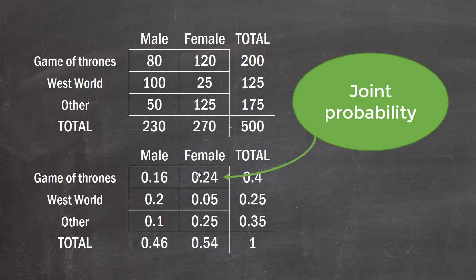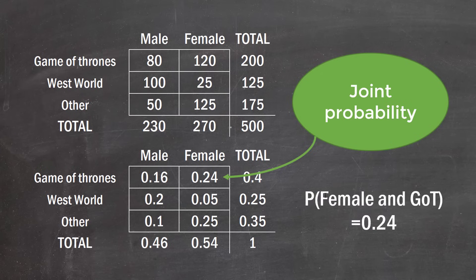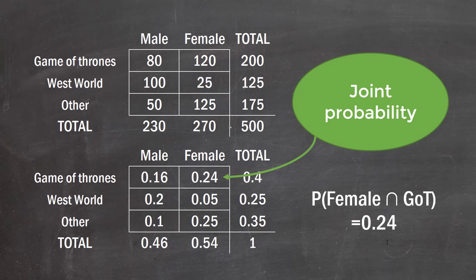So that 0.24 is called a joint probability. We write it as the probability of female AND Game of Thrones equals 0.24. You might see it written with the word 'and' in between, or with an upside-down U symbol called the intersection — a statistical term for the intersection of female and Game of Thrones, which is that joint probability.